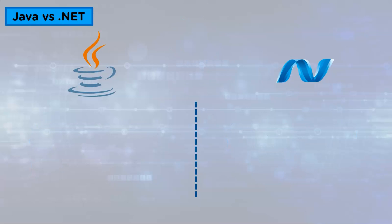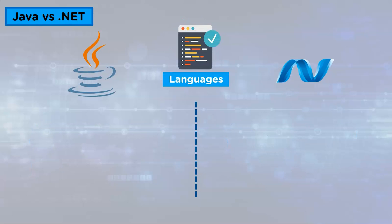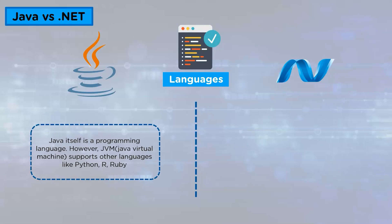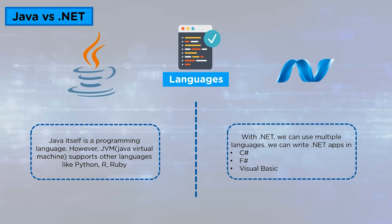The next parameter is Languages. Java itself is a programming language; however, the Java Virtual Machine supports other programming languages like Python, R, and Ruby. With .NET, we can use multiple languages — we can write .NET apps in C#, F#, and Visual Basic.